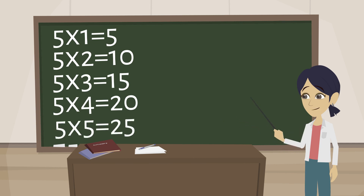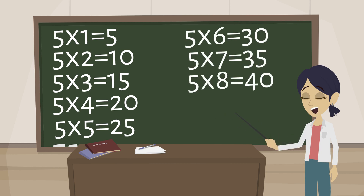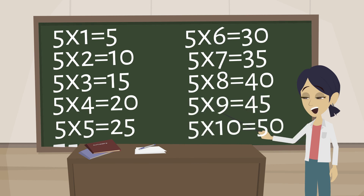5 6s are 30, 5 7s are 35, 5 8s are 40, 5 9s are 45, 5 10s are 50.